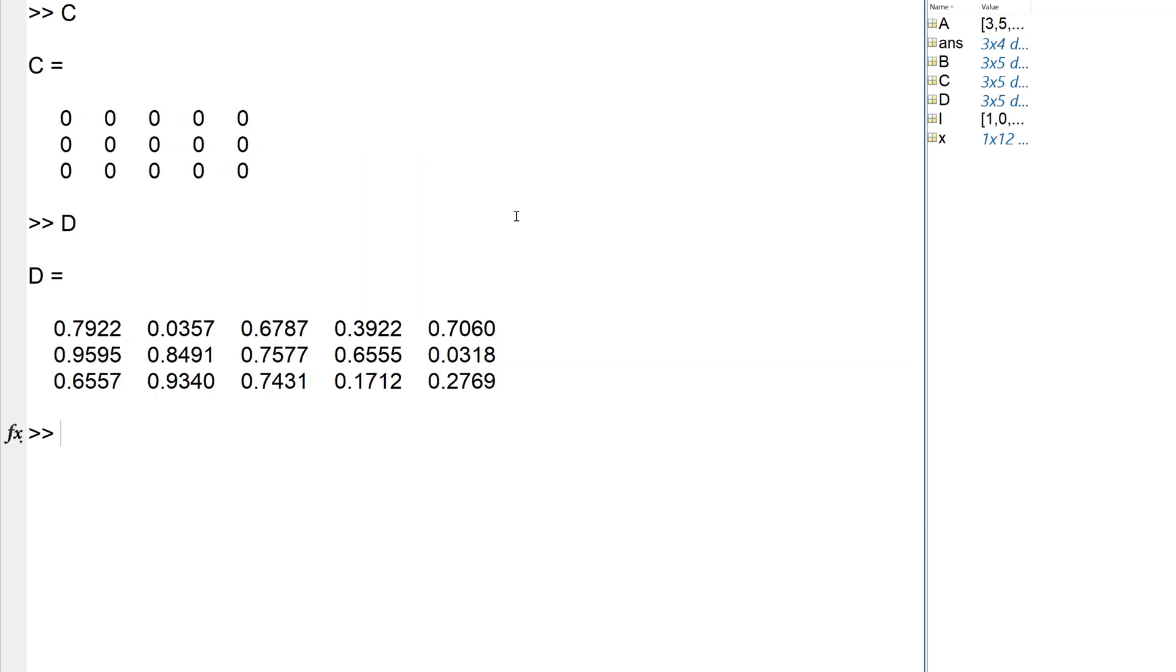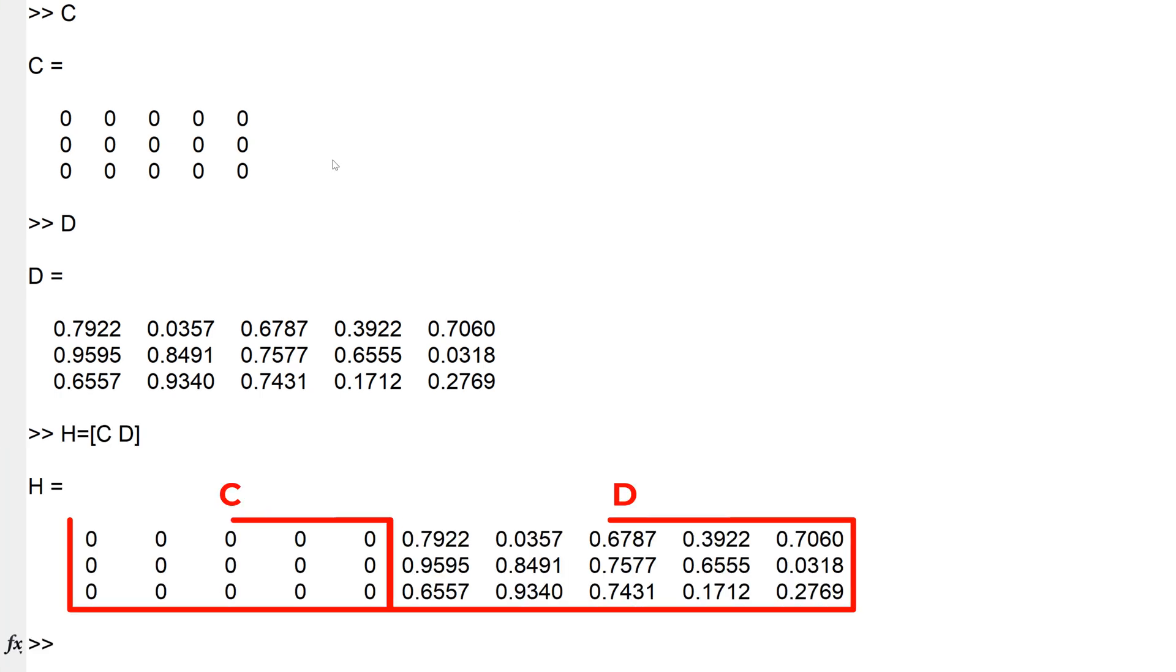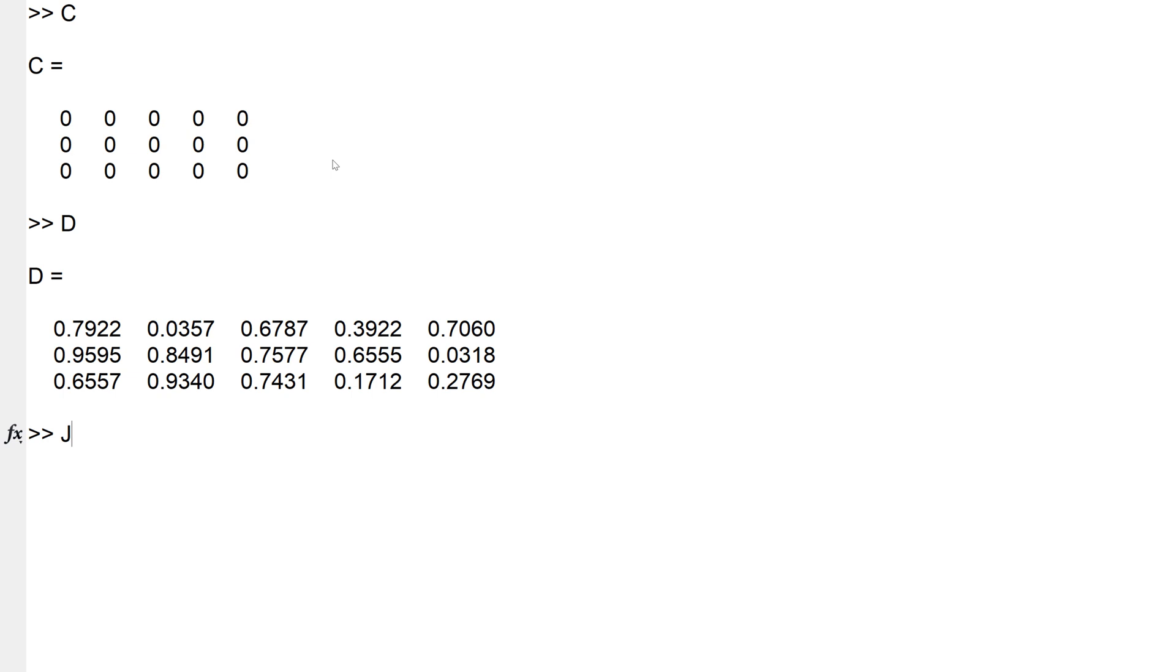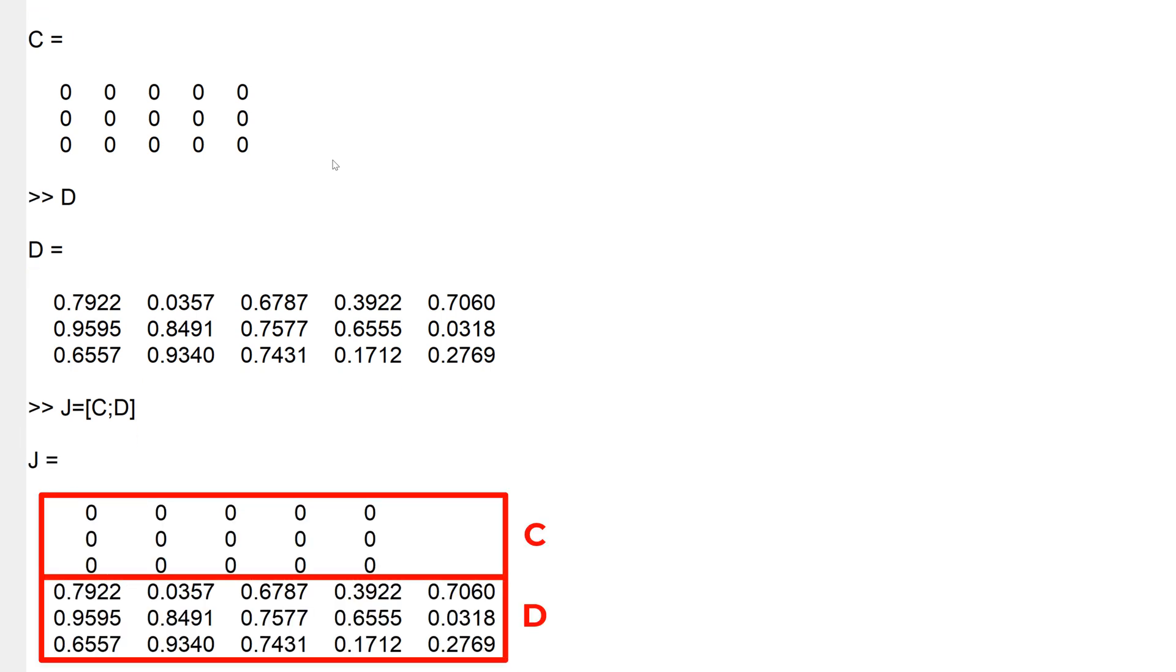You can combine existing matrices into one either column direction or row direction. To combine two existing matrices, the column or row size should be the same. I will show you how to combine matrices C and D in column or row directions. For matrix H, matrices C and D are combined in column direction with bracket and space between C and D. For matrix J, matrices C and D are combined in row direction with brackets and semicolon between C and D. You can keep adding the matrices as long as they comply the size of matrices.